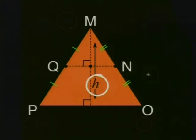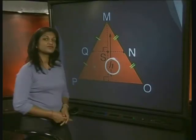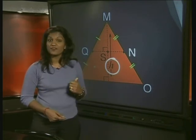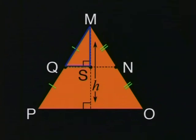I'm also going to label this point here S, where the perpendicular meets the line QN. Can you see another two triangles inside this new triangle that I've made? They are triangle MSQ and triangle MSN.